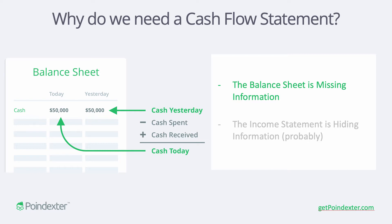That's really where the problem with the balance sheet lies — because it only captures a certain point in time, between two points we have no idea what took place. So the cash flow statement helps fill the gaps with those transactions that actually did take place to change any balances in the accounts on our balance sheet.